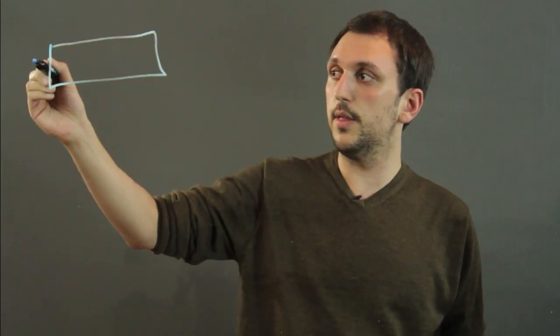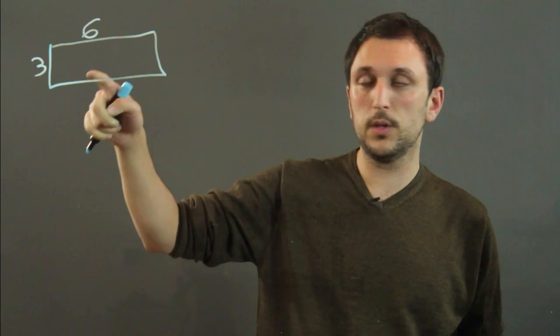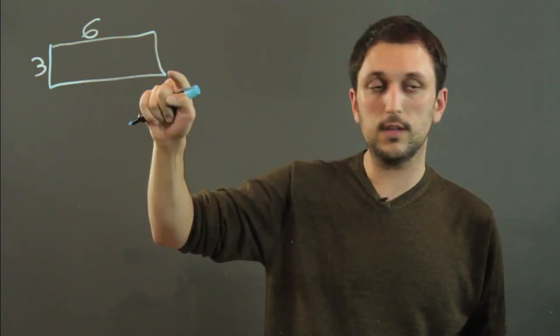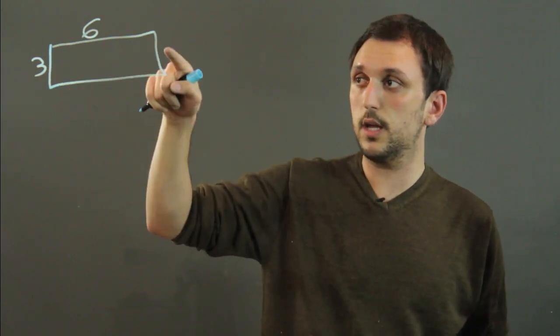For example, here's a rectangle that is 3 by 6. So if this side is 6, that means this side is 6. If this side is 3, that means this side is 3.